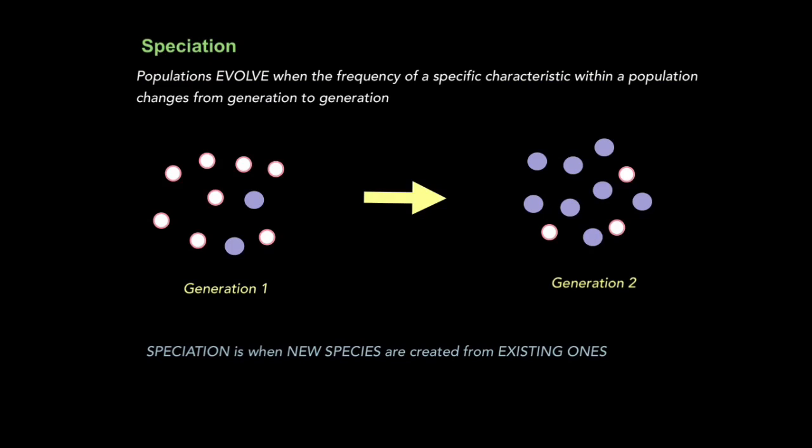Now let's look at the idea of speciation, which is similar but fundamentally different to the idea of evolution. Populations evolve when the frequency of a specific characteristic, or if you want to get technical, allele, within a population changes from generation to generation. If you look at this population, you can see that these two have a different characteristic to these. After they reproduce in the second generation, there's a higher frequency of this characteristic and a lower frequency of this one. Therefore the population is evolving. This feature could be the frequency of blue eyes in the human population or antibiotic resistance in bacteria. Evolution doesn't necessarily result in the formation of a new species. It just says populations change over time. Speciation, however, is when new species are created from existing ones. Often people think that's what evolution is, but it's not. It's speciation.